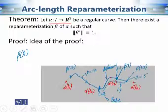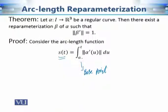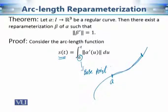How do we find this arc length parameter? We need a base point and the arc length function s(t). Here, a is the base point. In most cases we take a = 0 to simplify the integration. The function s(t) gives the arc length from the base point: from alpha(a) to alpha(t). This arc length function is giving us the length along the curve, and we want to use s as our new parameter.